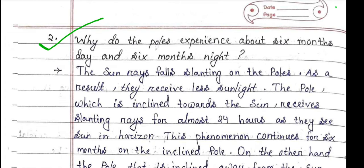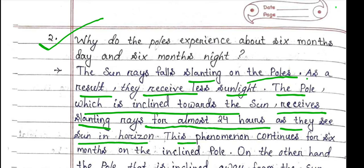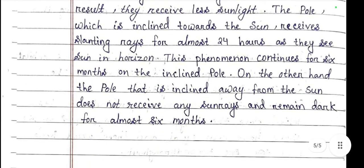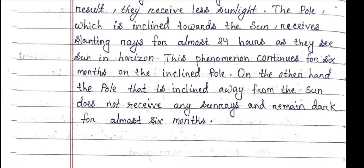The Sun rays fall slanting on the poles; as a result, they receive less sunlight. The pole which is inclined towards the Sun receives slanting rays for almost 24 hours, as the Sun is seen on the horizon. This phenomenon continues for six months on the inclined pole. On the other hand, the pole inclined away from the Sun does not receive any Sun rays and remains dark for almost six months.